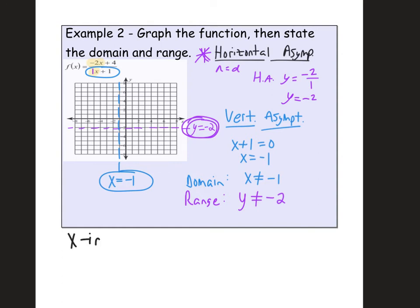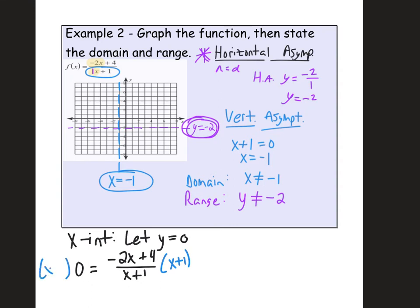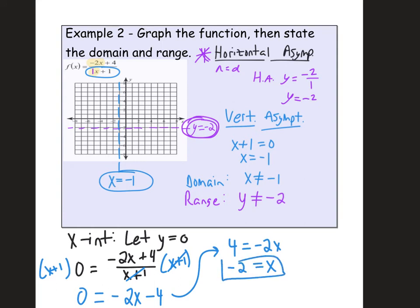To find the x-intercept, let y equal zero. Setting the expression equal to zero: 0 equals negative 2x plus 4 over x plus 1. Multiply both sides by x plus 1 to clear the denominator, leaving 0 equals negative 2x plus 4. Subtracting 4 from both sides gives negative 4 equals negative 2x, and dividing by negative 2 gives x equals 2.